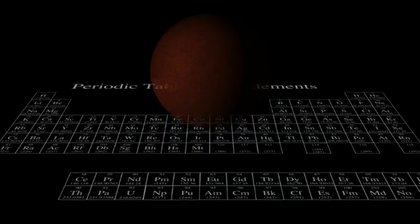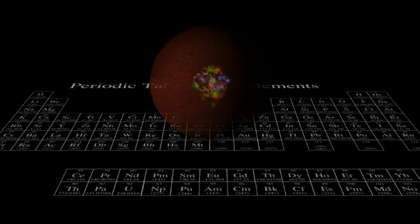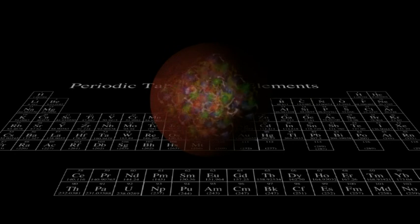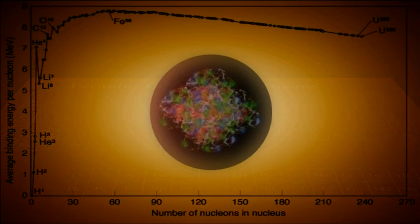So as we add nucleons and work our way up the chart of the periodic table, initially each nucleus is generally a little more tightly bound than the one before. This chart gives the actual numbers.